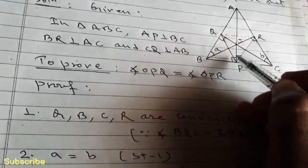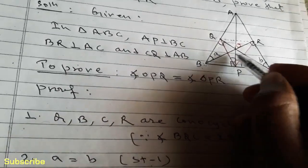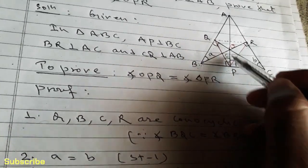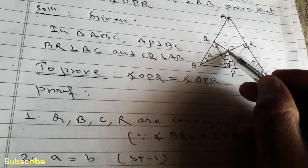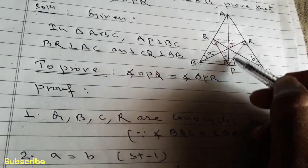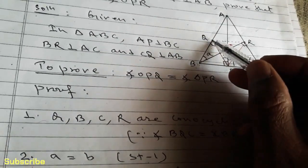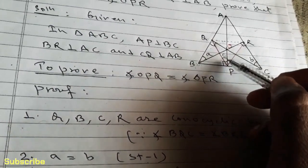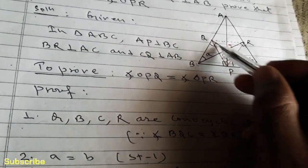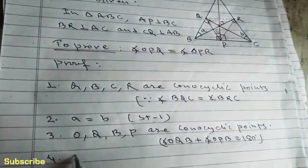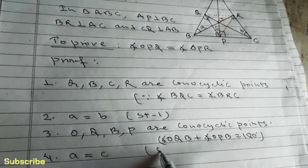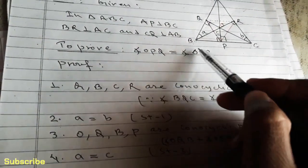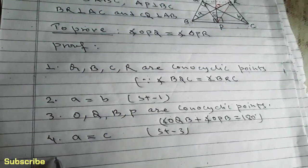Statement number four: let's suppose angle OBQ as angle A and angle OPQ as angle C. Both angles OBQ and OPQ stand on the same segment OQ. Since we have shown the four points O, Q, B, P are concyclic from statement three, we can write angle A equals angle C. This is from statement three.